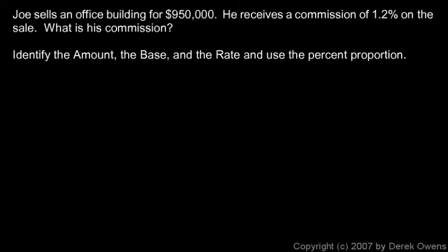This first example: we're told that Joe sells an office building for nine hundred and fifty thousand dollars and he receives a commission of 1.2 percent on the sale. This is typically how salespeople make their money — they sell something and then they get a certain percentage of the sale price, and that's how they make their living. So in this case, how much money does he make? What is his commission — what's the portion he gets to take home?